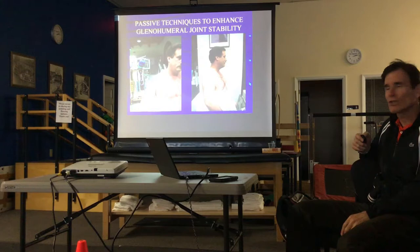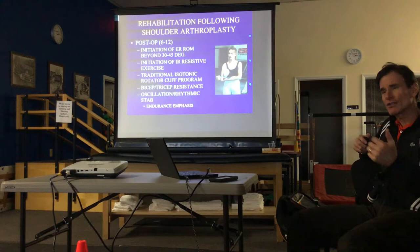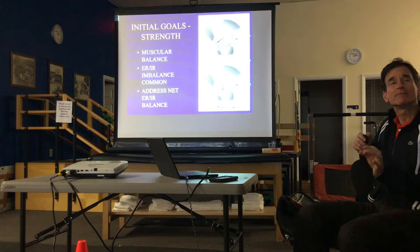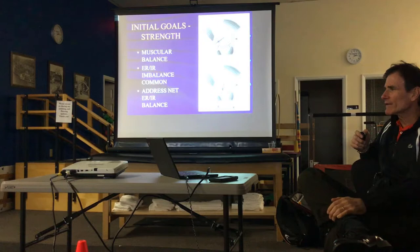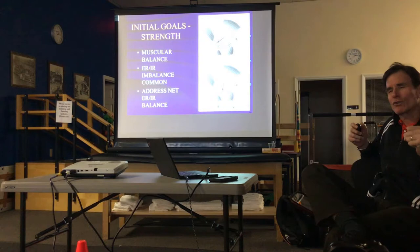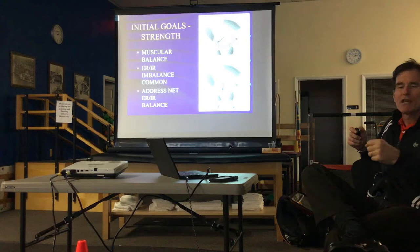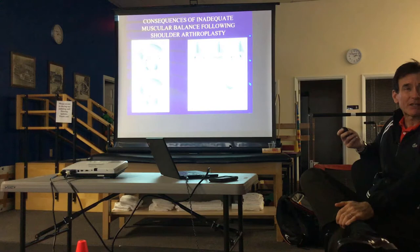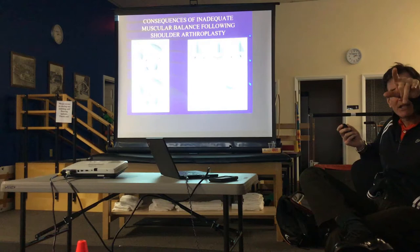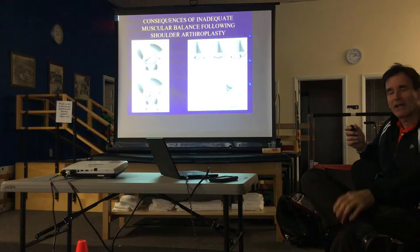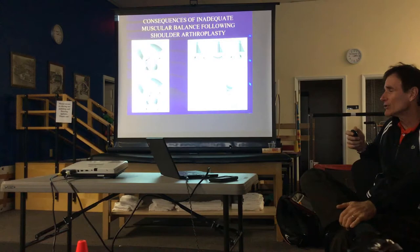Starting at six weeks, we add internal rotation strengthening in addition to all the other exercises, and we can then push for external rotation range of motion to end ranges. The key is achieving a good external to internal rotation muscle balance. If you have too much IR strength relative to ER, co-contraction will shear the shoulder anteriorly — or posteriorly if the reverse imbalance exists. We don't want that because of the rocking horse phenomenon: shearing forces can cause the glenoid keel pegs to rock back and forth, leading to glenoid implant loosening.